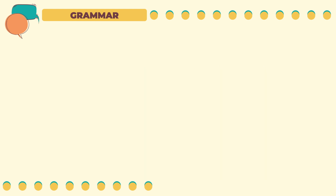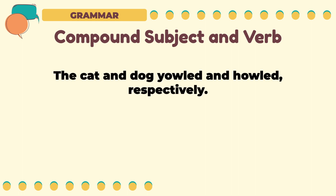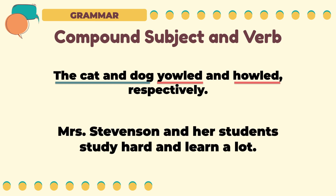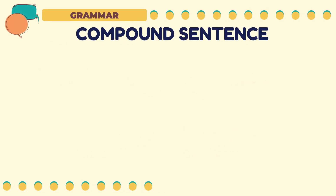Lastly, a simple sentence may have both a compound subject and a compound verb. For example, 'The cat and dog yelled and howled respectively' — the compound subject is 'the cat and dog,' and the compound verb is 'yelled and howled.' 'Mrs. Stevenson and her students study hard and learn a lot' — the compound subject is 'Mrs. Stevenson and her students,' and the compound verb is 'study and learn.' We are now done with simple sentences.